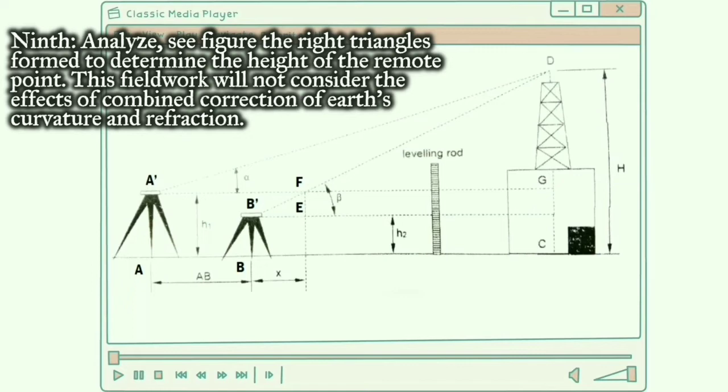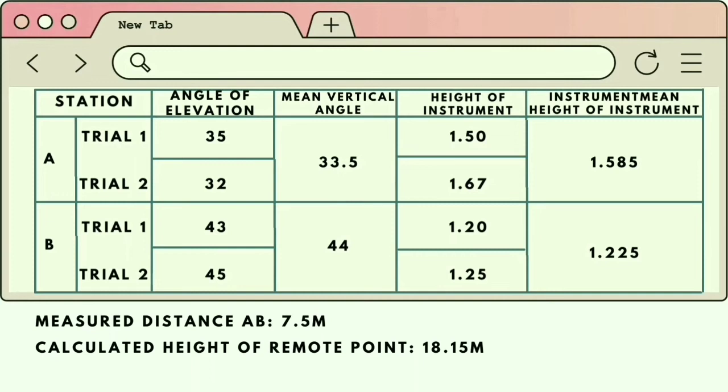And here are the following data. Stations A and B have each two trials for angle of elevation, which are 35, 32, 43, and 45 respectively.